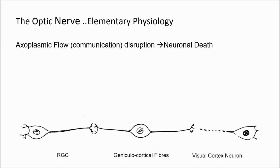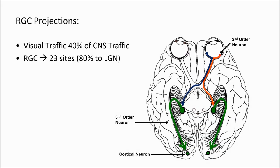The same happens in the opposite direction: with injury to the visual cortex neurons, the damage will eventually show in the retinoganglionic cells corresponding to the area of cortical injury. Almost 40% of all afferent and efferent fibers to the brain at any time carry visual information. The retinoganglionic cell axons via the optic nerve project to more than 23 sites in the brain. Once affected, the pattern of damage reflected in a visual field or an OCT may mimic or distort that of glaucoma.